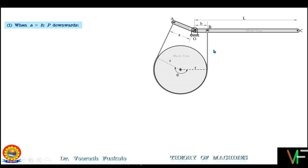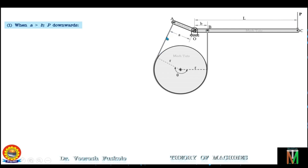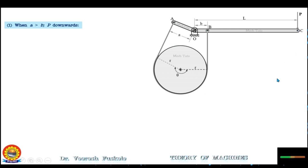In this diagram, distance a is greater than b and force is applied downward. When the force is applied downward, this side of the band will be pulled up and the band will be tightened, applying the brakes. If the force were applied upward instead, this portion of the lever would come down, the band would loosen, and the brakes would not be applied.